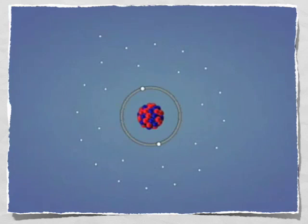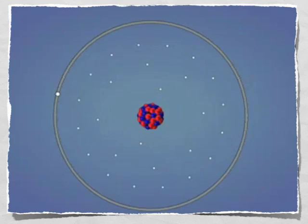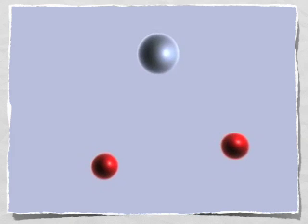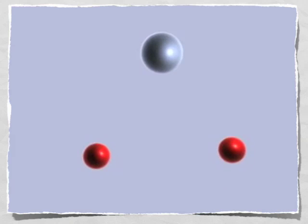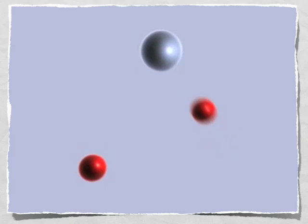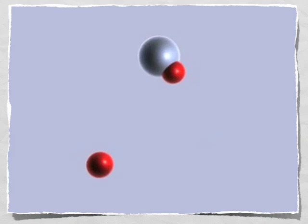Electrons with a relatively low amount of energy have their electrons located in energy levels close to the nucleus, whereas high-energy atoms possess electrons located farther from the nucleus. The arrangement of electrons in energy levels is very important in determining how an atom will interact with other atoms.